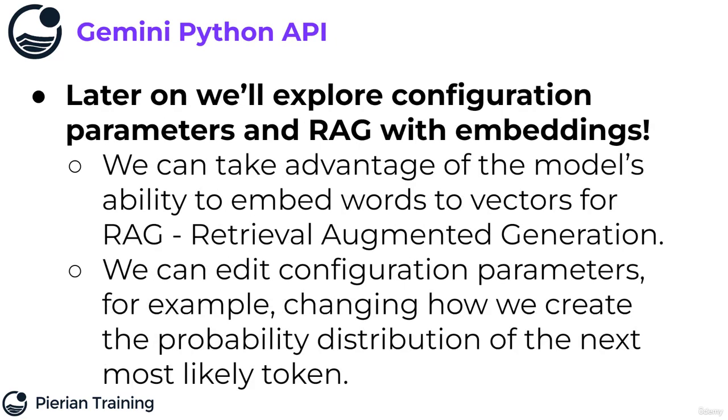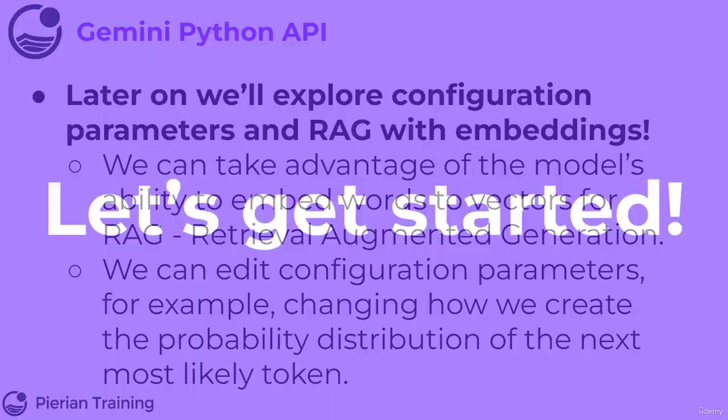Later on, we're going to explore configuration parameters and what's known as RAG with embeddings. So we can actually take advantage of the model's ability to embed words to vectors for what is known as RAG, Retrieval Augmented Generation. We can also edit what are known as configuration parameters. For example, we could change how we create the probability distribution for the next most likely token. Alright, with that being said, let's get started and set you up with an API key to access Gemini.